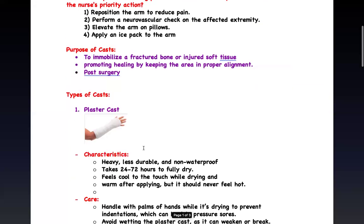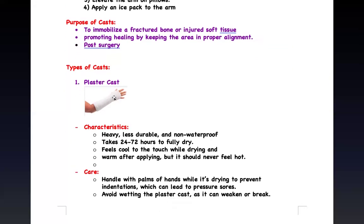There are two types of casts you need to know for your NCLEX. First, a plaster cast — it's all plaster, also called POP (plaster of Paris). It is very heavy, less durable, and not waterproof. If water gets on it, that's not good. This type is mostly used in underdeveloped countries. It takes 24 to 48 hours to be fully dry. You should make sure there is no water on it for at least 72 hours, because it's not waterproof and it's very critical during that period.